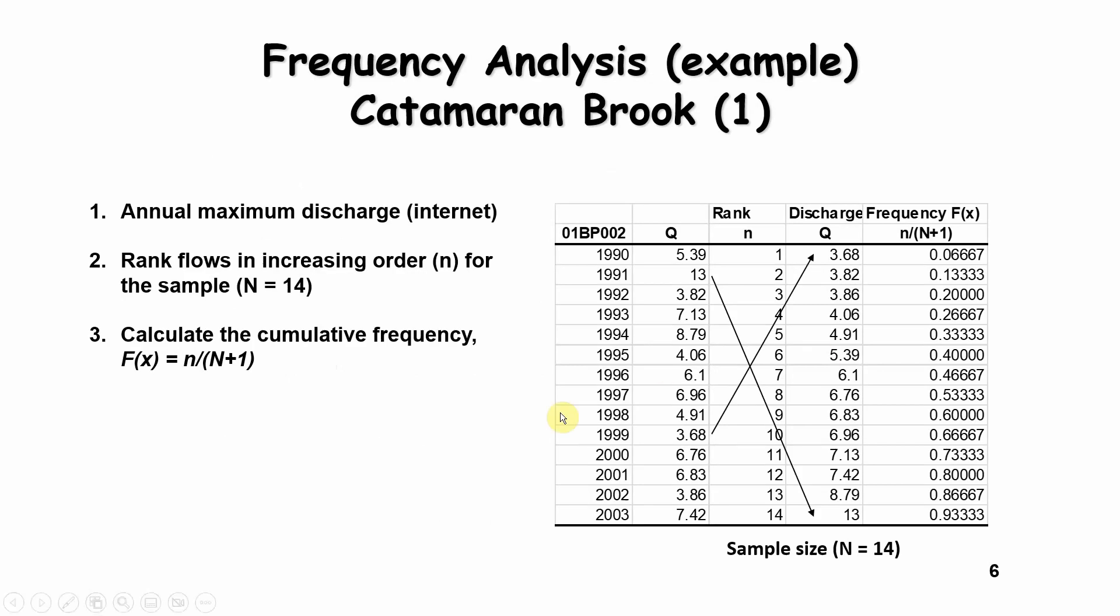Now, if we move to an example, here we're going to use the data for the annual maximum discharge for Catamaran Brook. We can get the data either from sampling a particular river, or in this case, we are taking data directly from the Water Canada survey site, which is the station 01BP002. If we extract the data from the website, we get basically the annual discharge for 14 years in this particular case, which would be 1990 to 2003. And this would be your annual maximum discharge 5.39 for the first year, for instance.